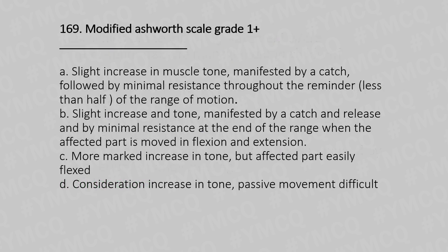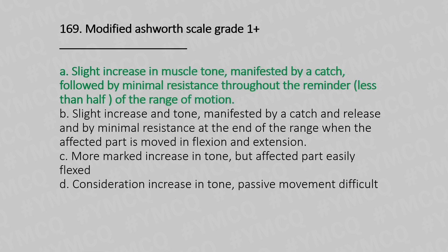Question 169: Modified Ashworth Scale Grade 1 Plus — Option A: Slight increase in muscle tone manifested by catch followed by minimal resistance throughout the remainder of the range of motion. Option B: Slight increase in tone manifested by catch and release and by minimal resistance at the end of the range when the affected part is moved in flexion and extension. Option C: More marked increase in tone but affected part easily flexed. Option D: Considerable increase in tone, passive movement is difficult. And the answer is Option A.